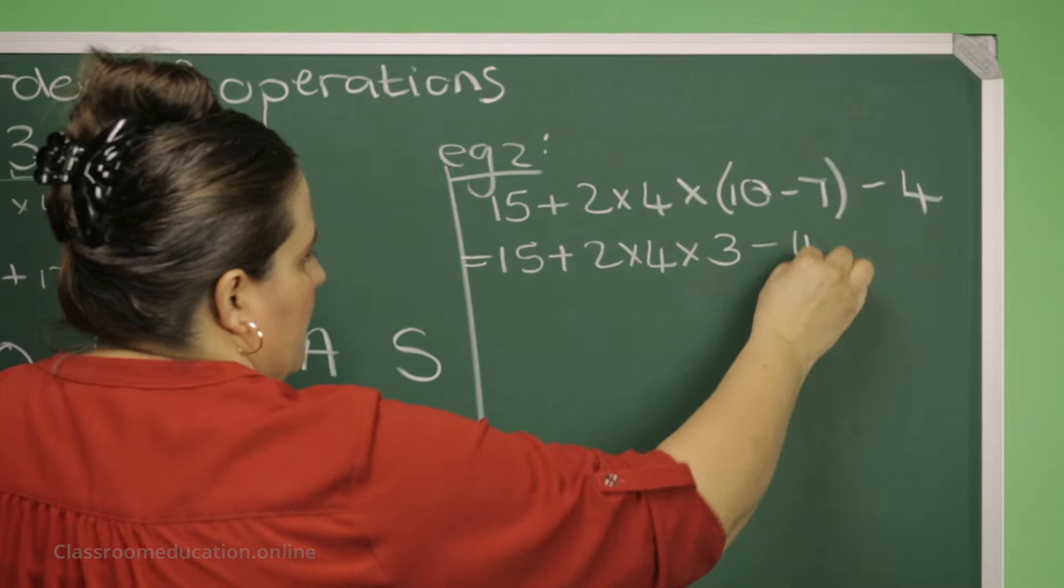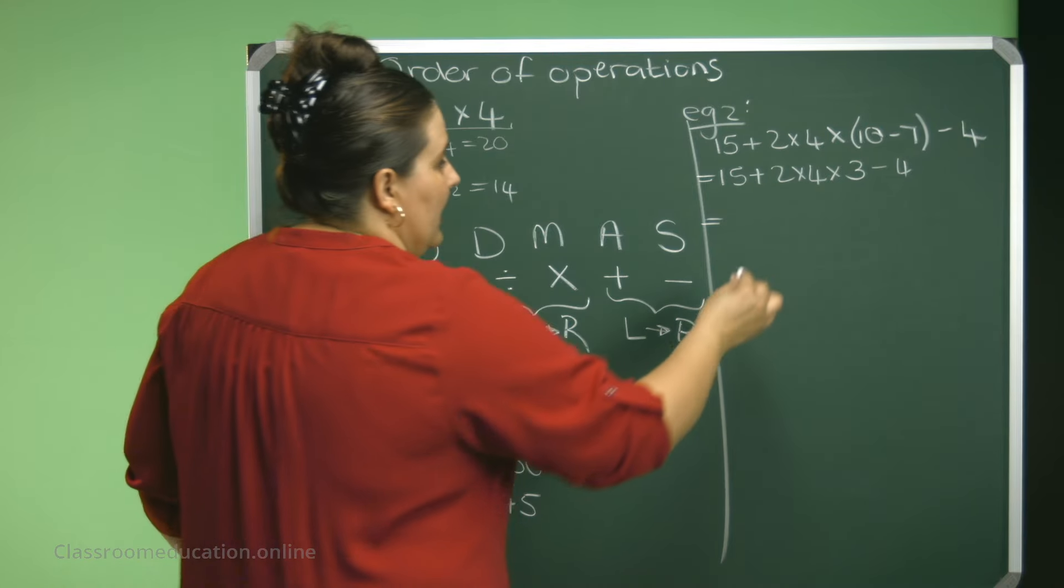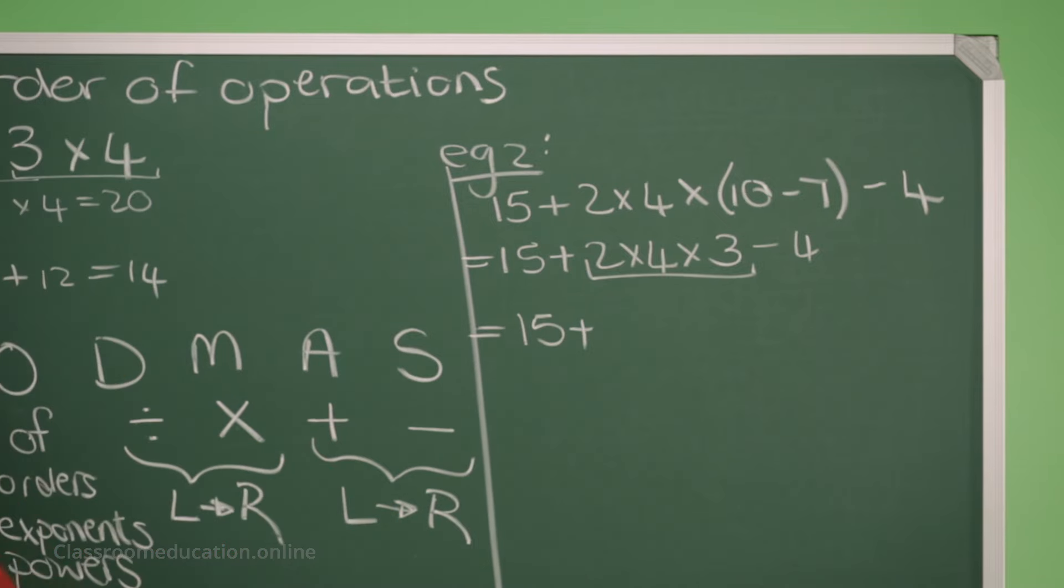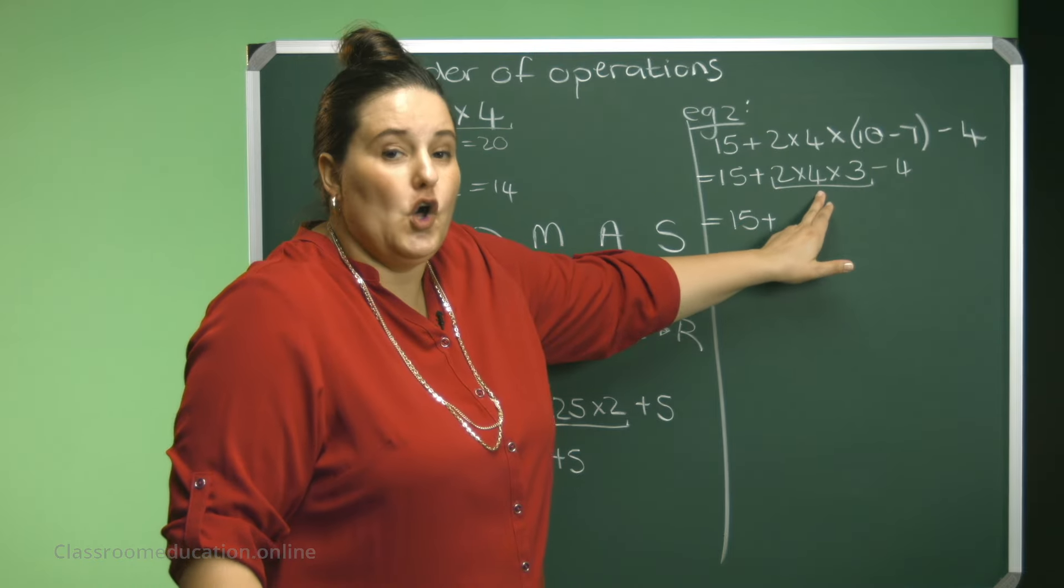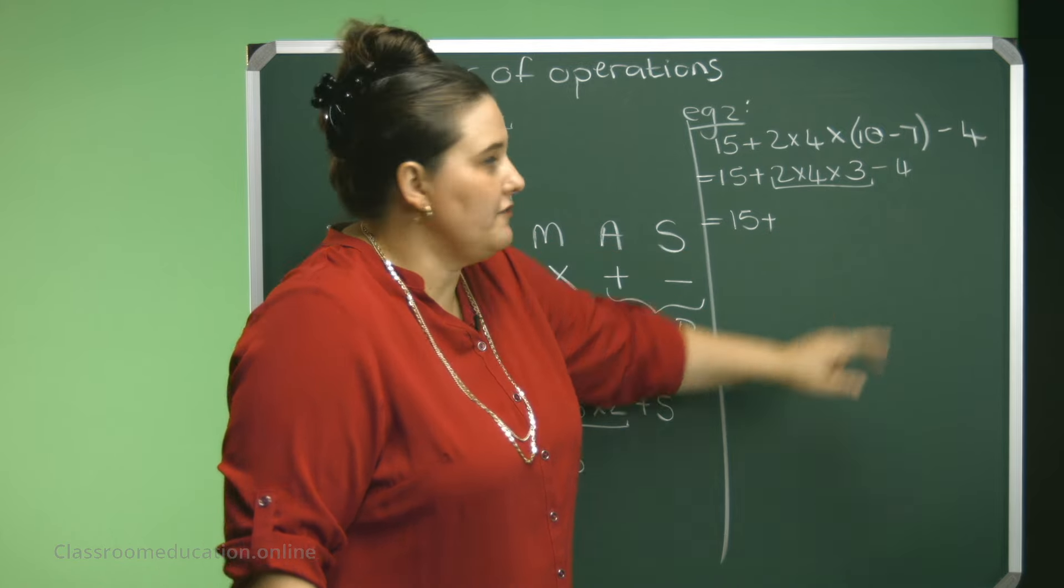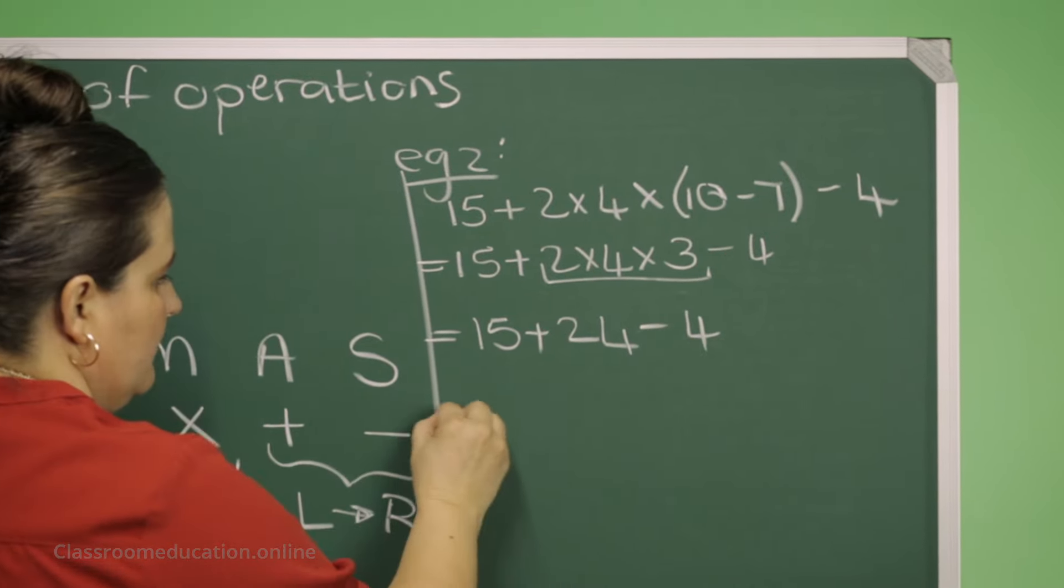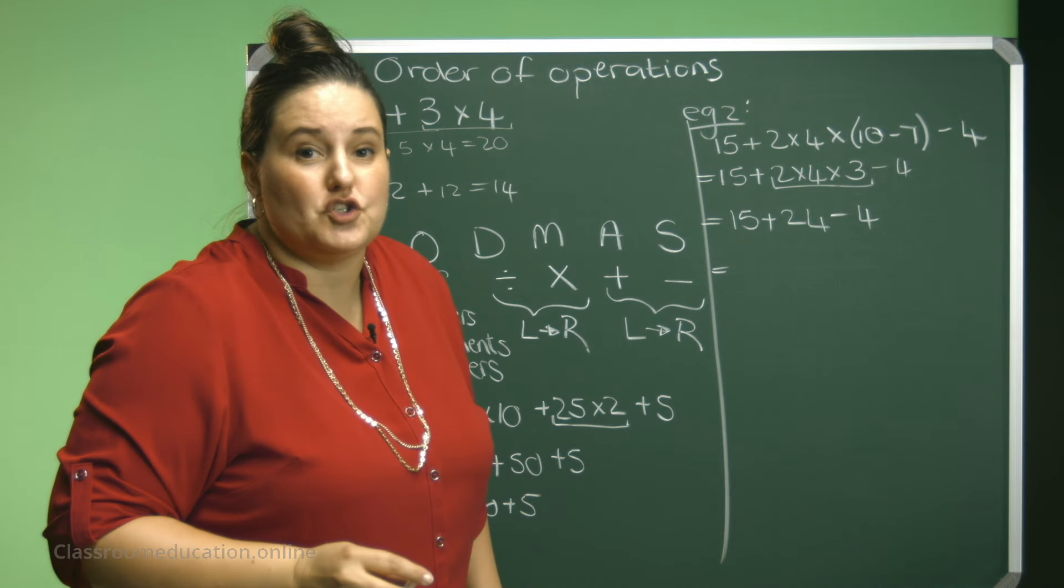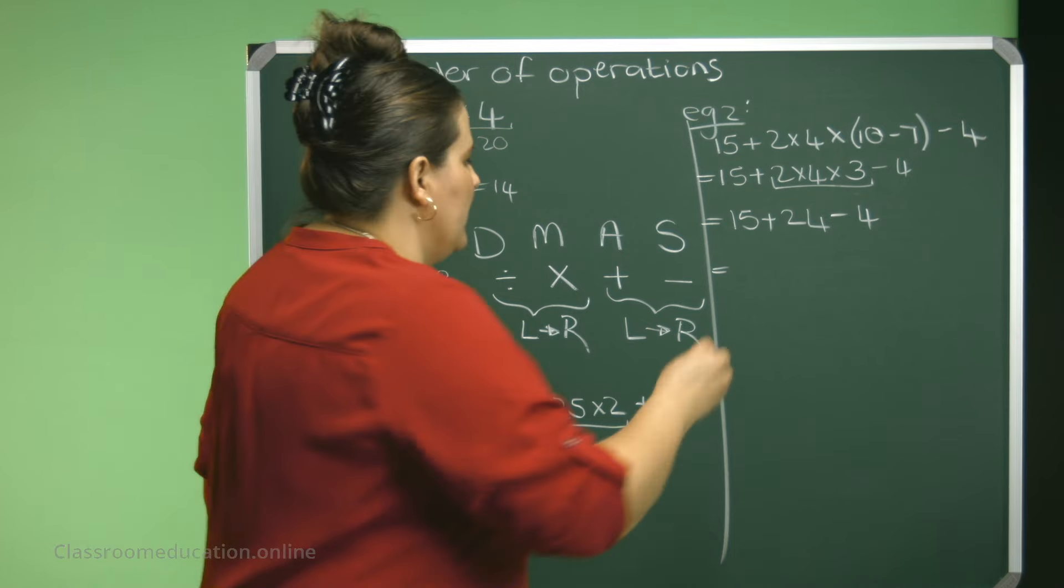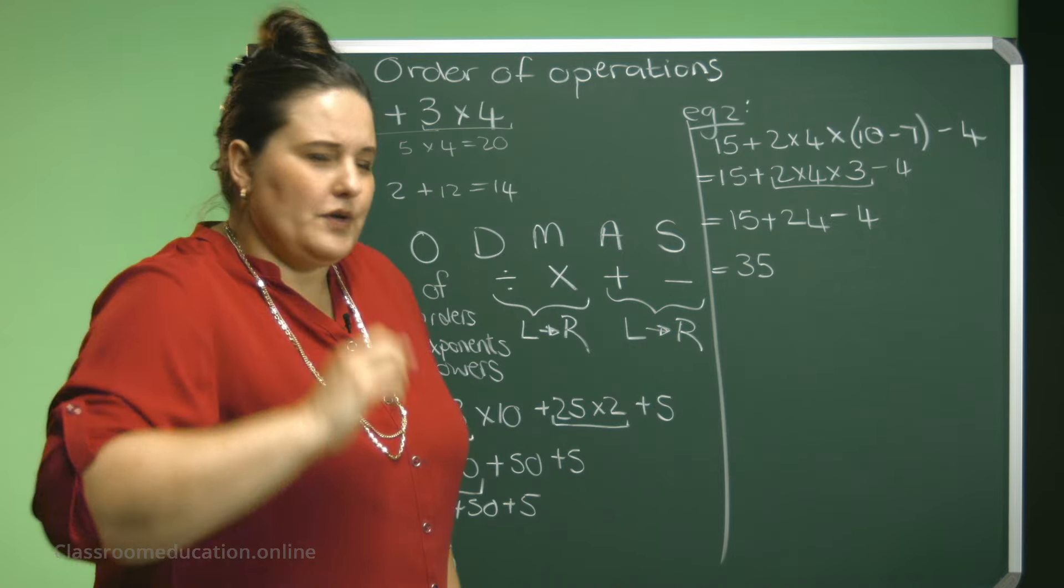So I'm going to say 15 plus 2 times 4 times 3 because 10 minus 7 is 3, minus 4 equals. And now, again, I have the multiplication. So let's do that. 15 plus 2 times 4 is 8. 8 times 3 is 24 minus 4. So 15 plus 24 will give me 39, and 39 minus 4 is 35.